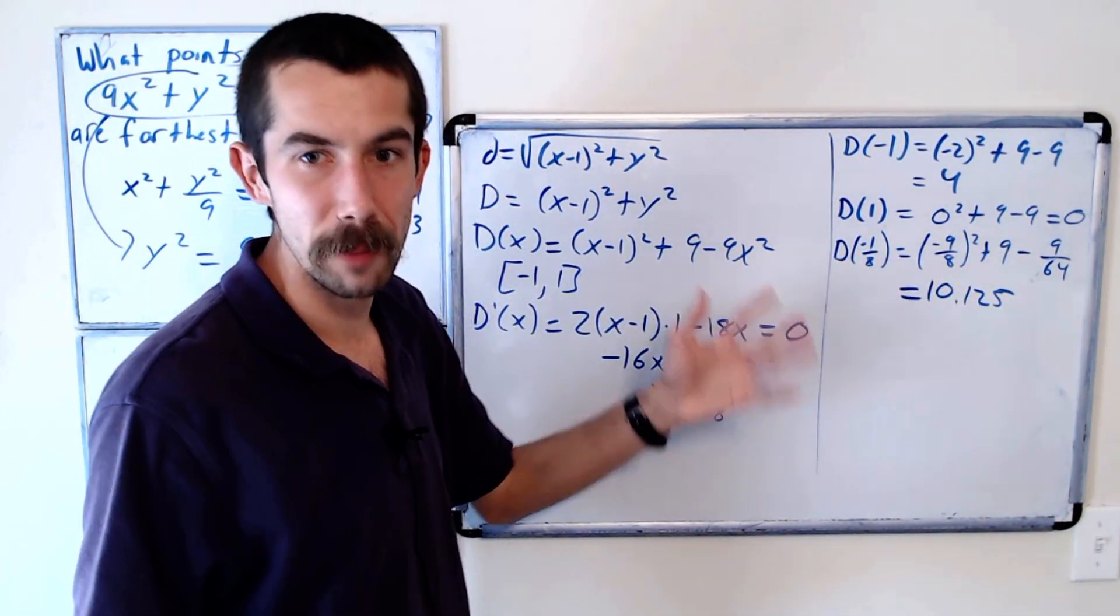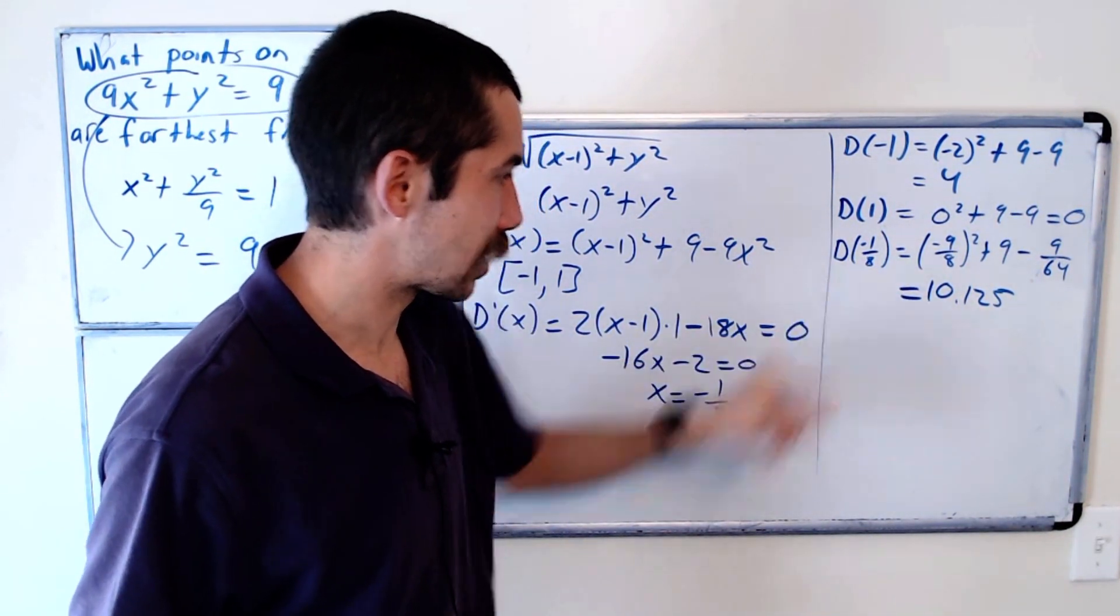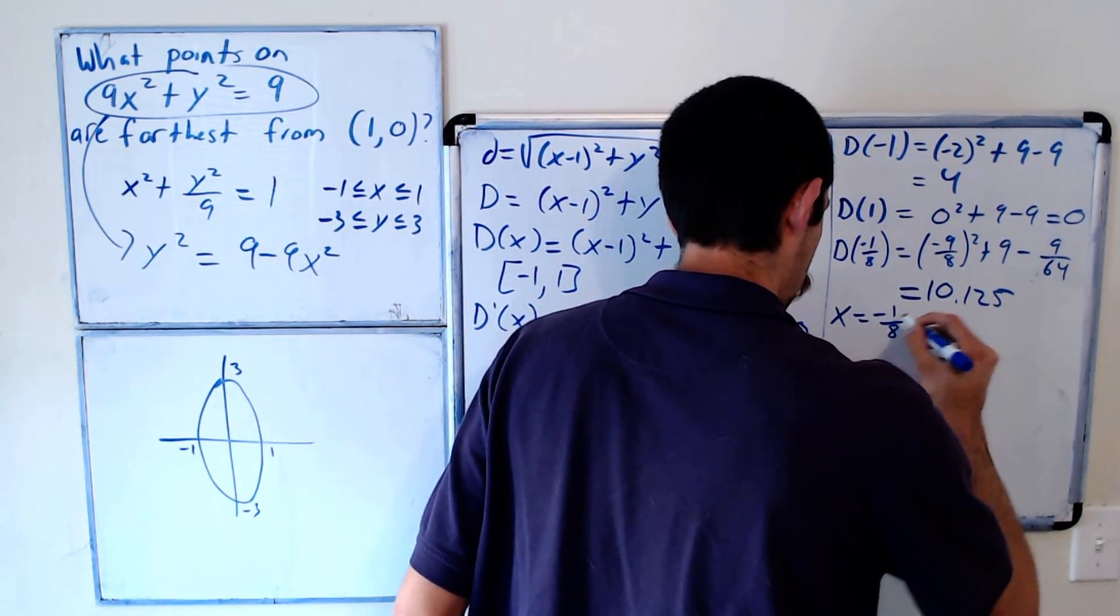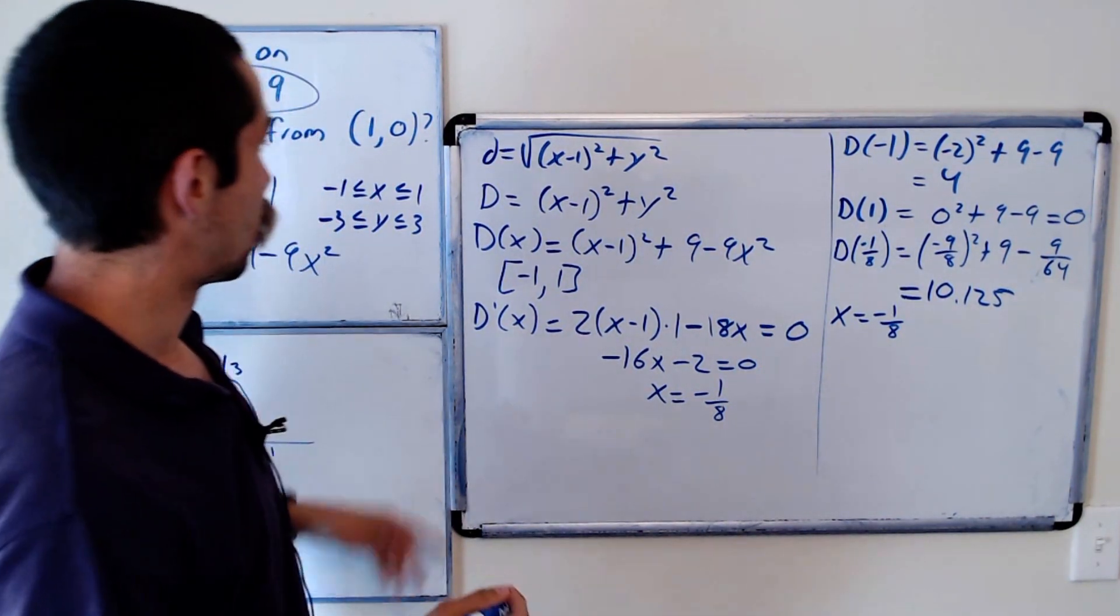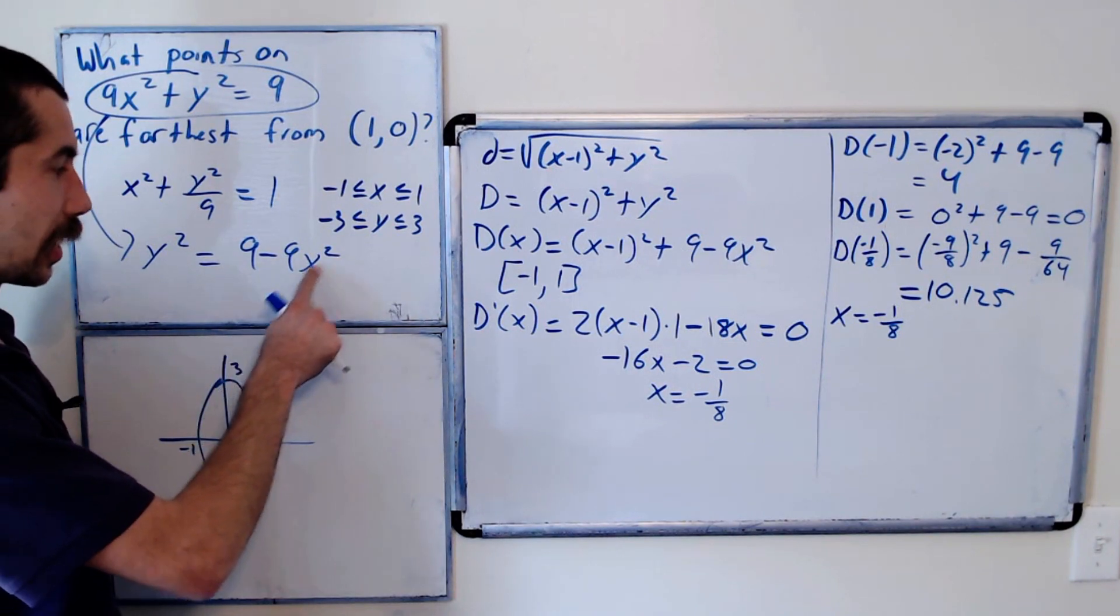Because we're trying to maximize the distance, the function is maximized at x equals negative 1 eighth. So the question is, what is the y value when x equals negative 1 eighth? Well, we know y squared equals 9 minus 9x squared.